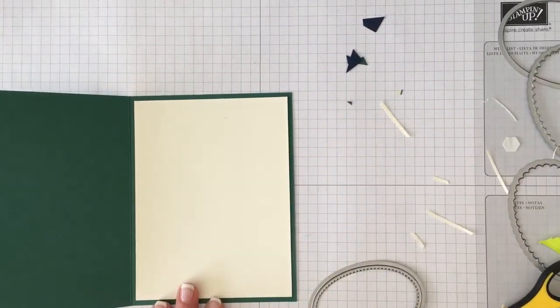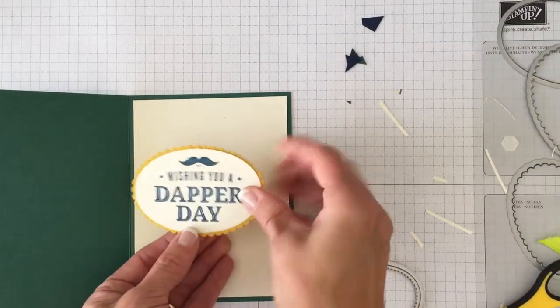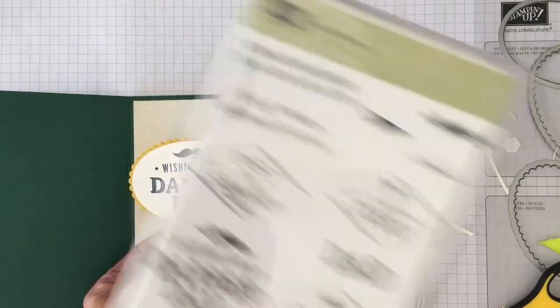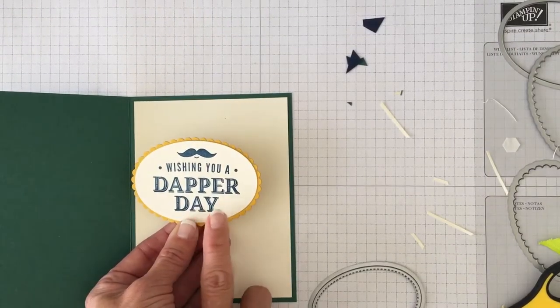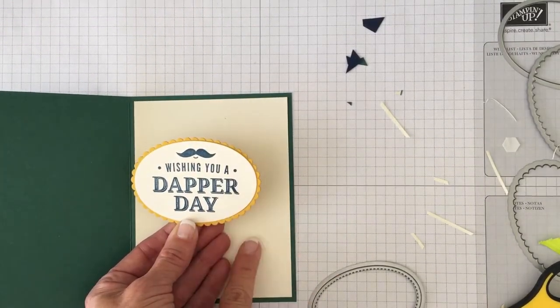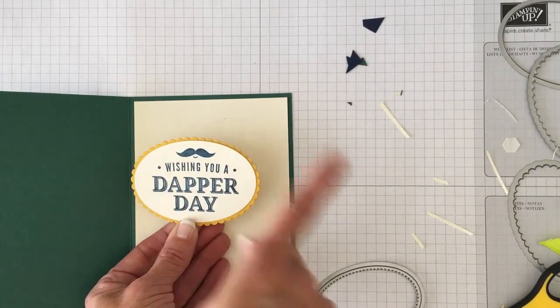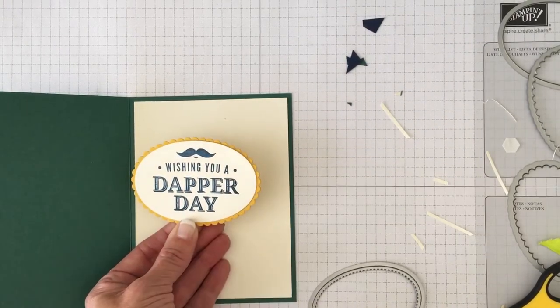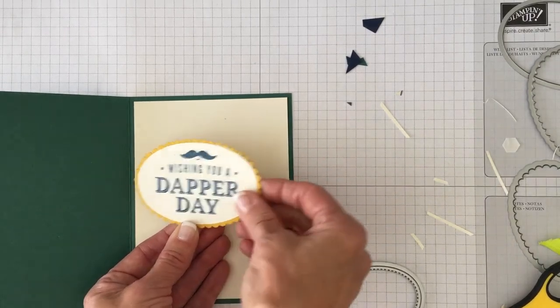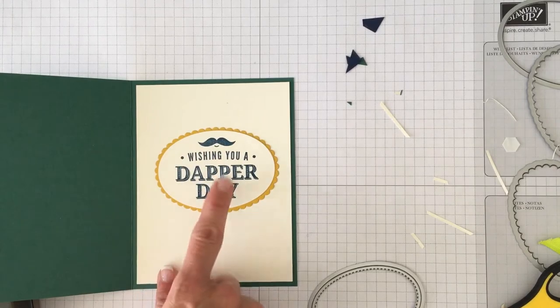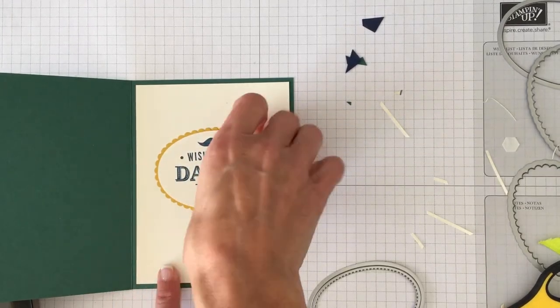And just to jazz up the inside, I wanted to get some crushed curry in there. I stamped the wishing you a dapper day from the stamp set with a little mustache. I stamped that and I cut it out with one of the ovals that fit around it. And then I used the layering oval scallop that's also in the ovals layering oval set. And then I just put the crushed curry so whenever you look at the inside of the card you see Tranquil Tide, you see the Night of Navy, and the crushed curry.